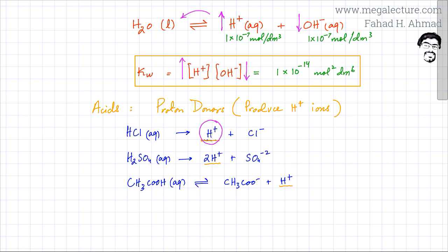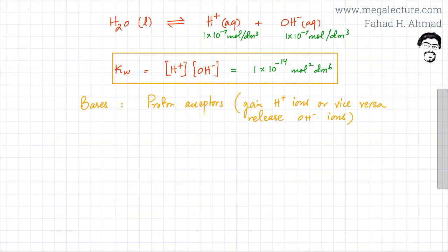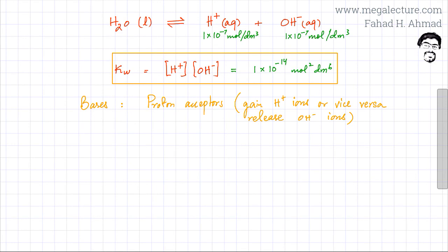The opposite of acids are bases. Bases are proton acceptors — they gain H⁺ ions — or they release OH⁻ ions. When you add a base to a solution, bases decrease the quantity of H⁺ ions and increase the quantity of OH⁻ ions. They are substances that produce OH⁻ ions or reduce the amount of H⁺ ions.